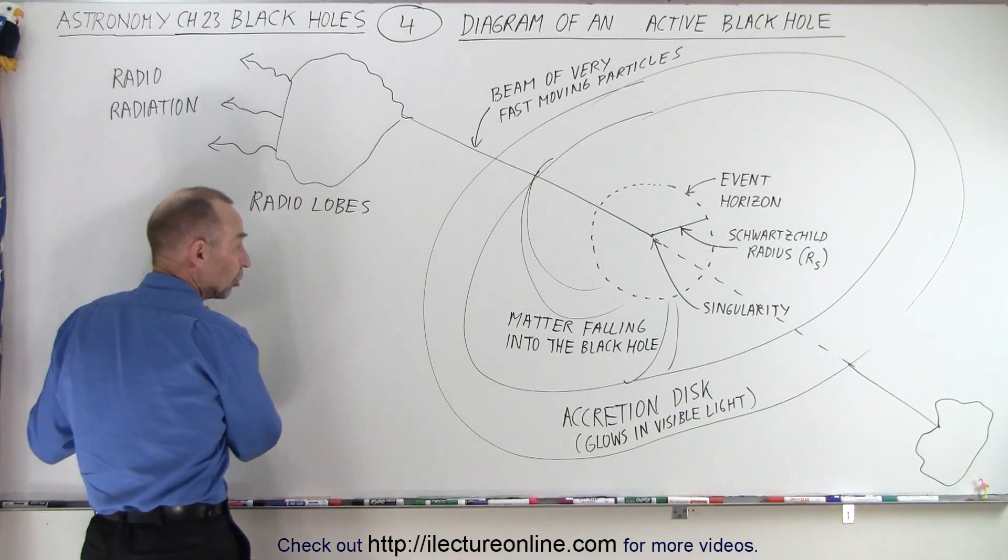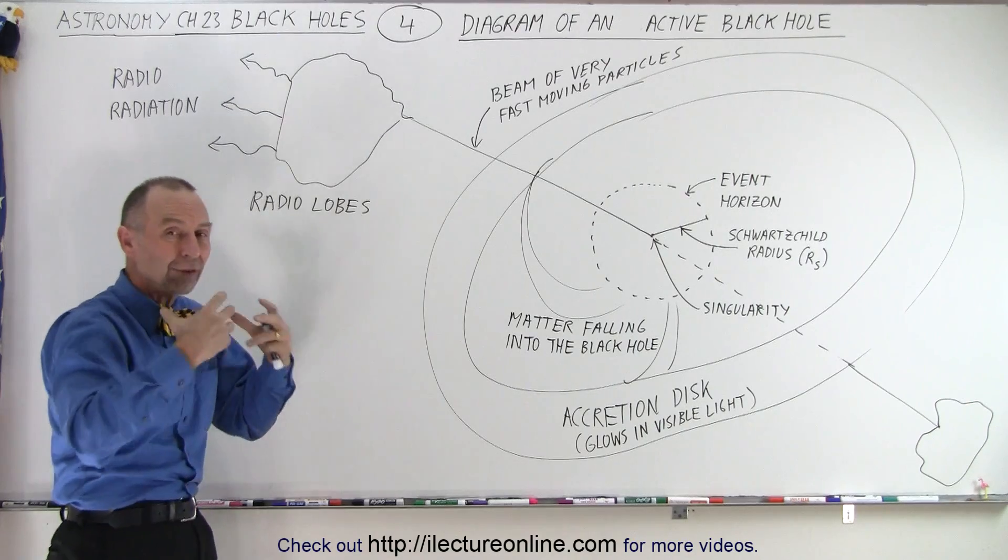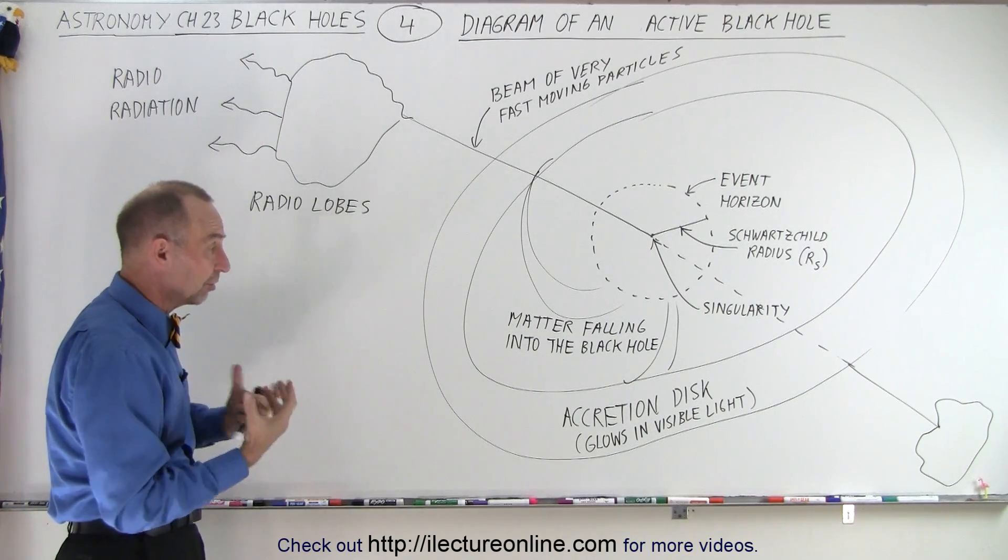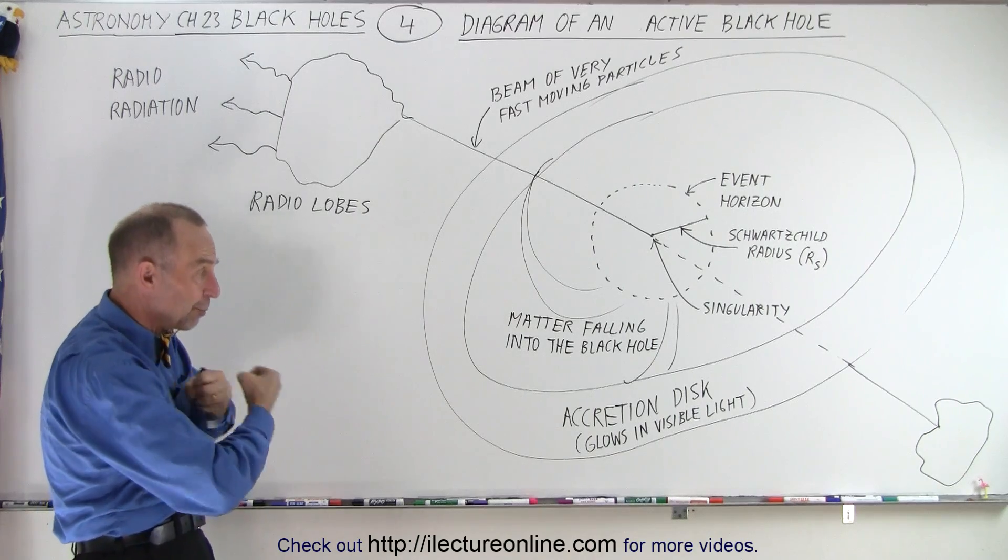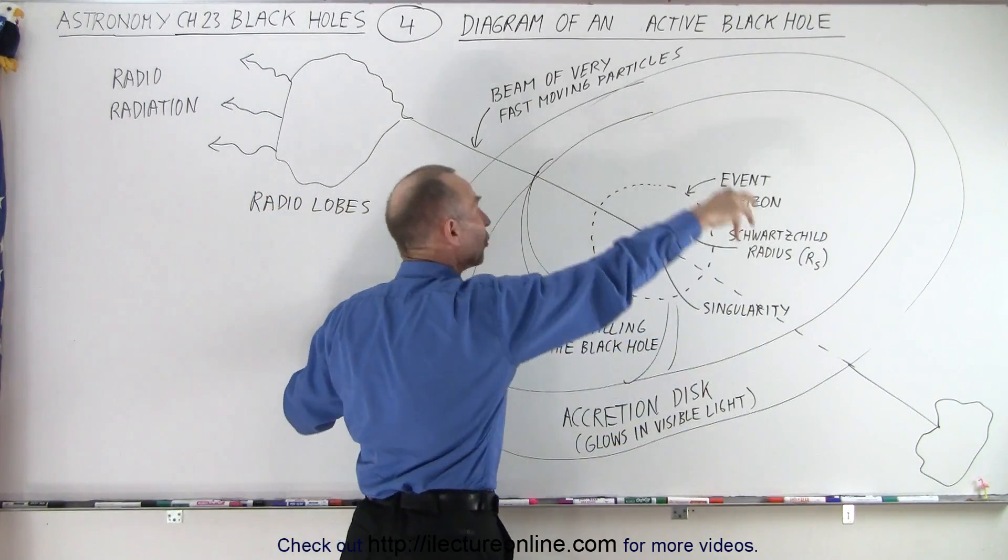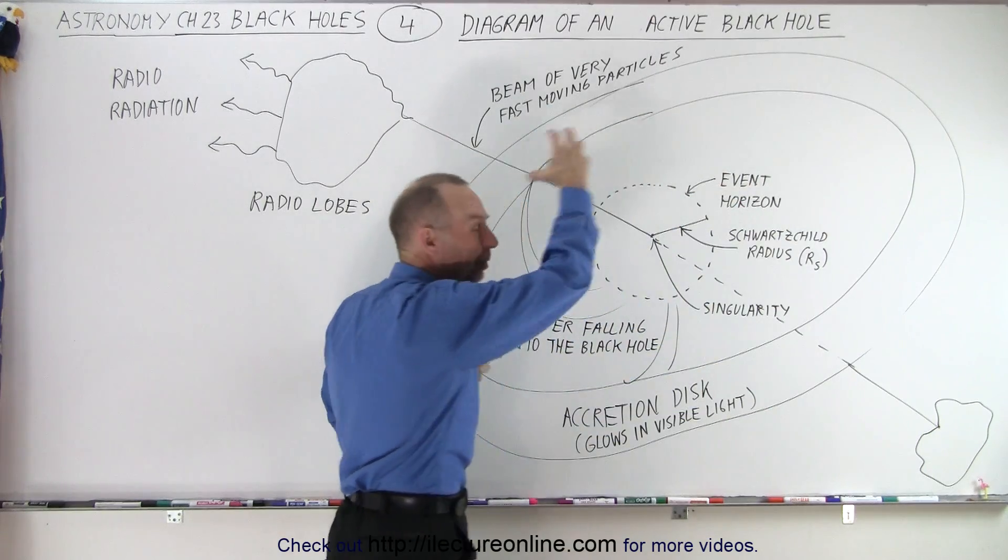Usually before it gets close to the black hole, the enormous gravitational forces will rip the object apart. It would be a planet or a star, it doesn't matter. It simply rips the object apart and all the debris tends to go around the black hole, kind of like a whirlpool.